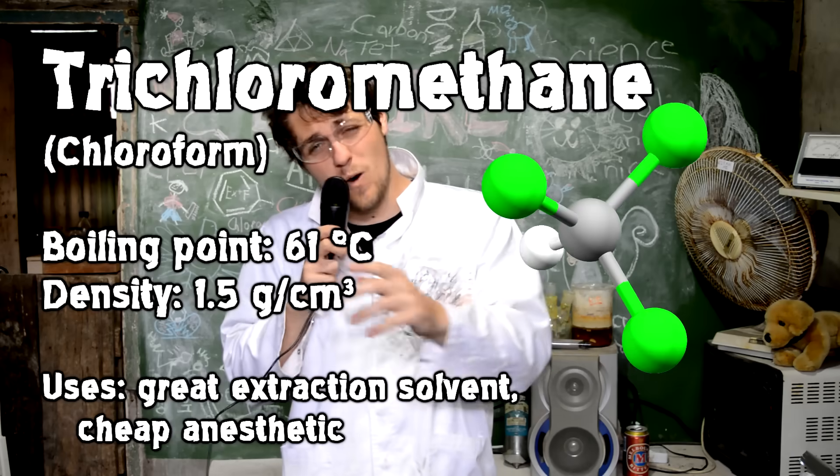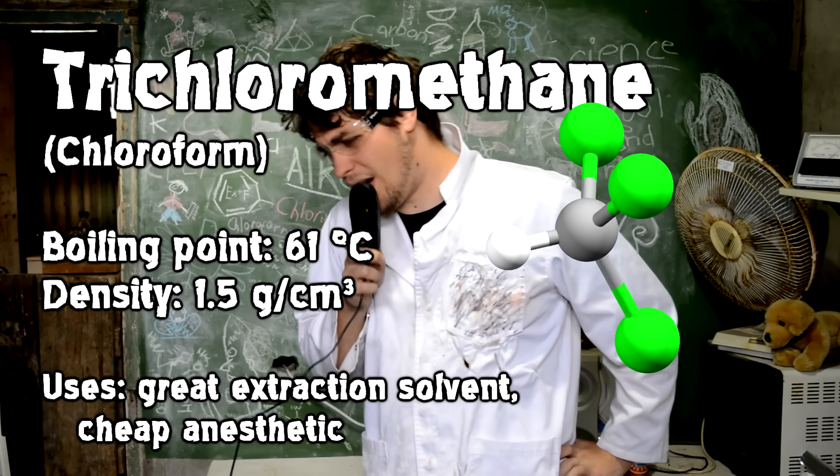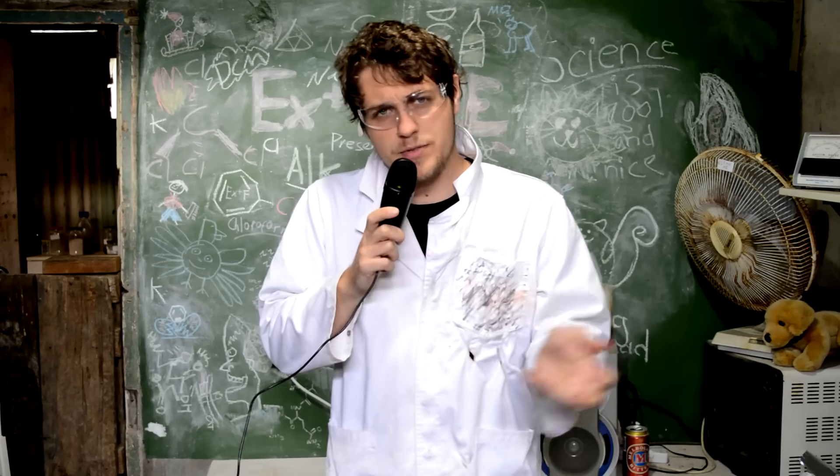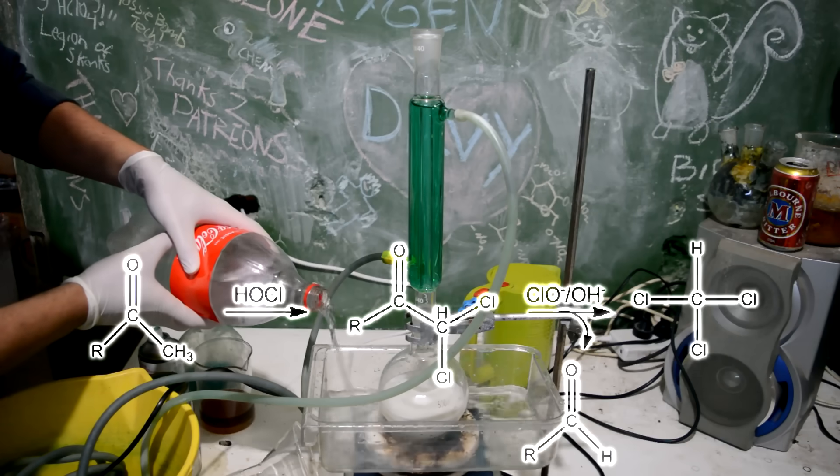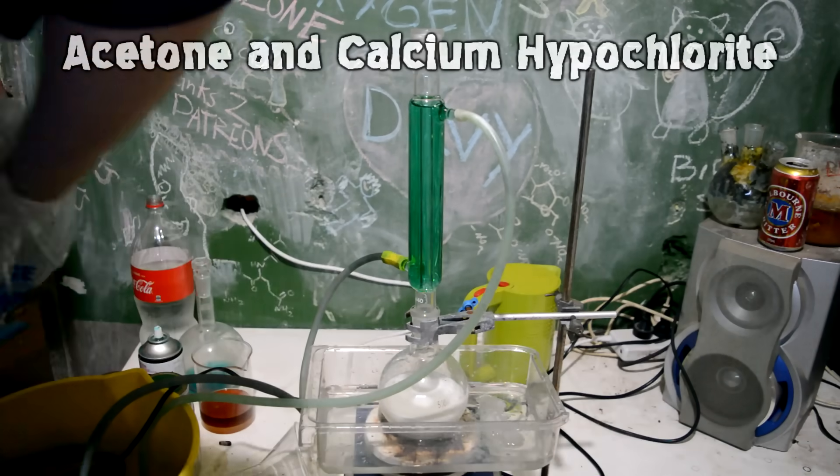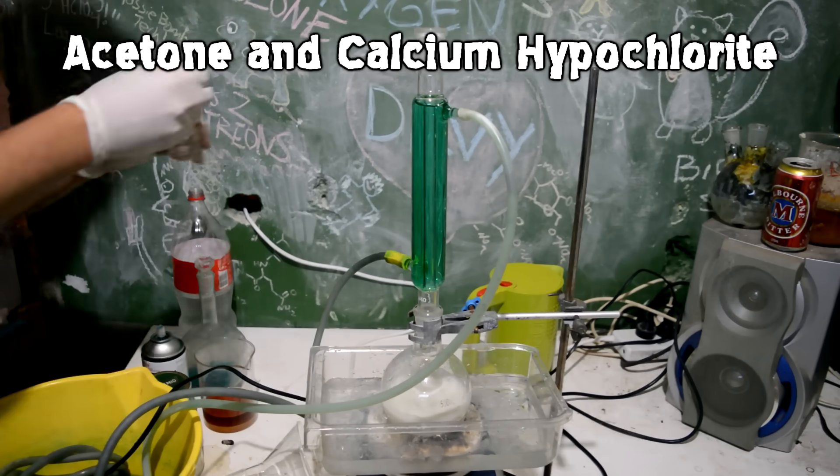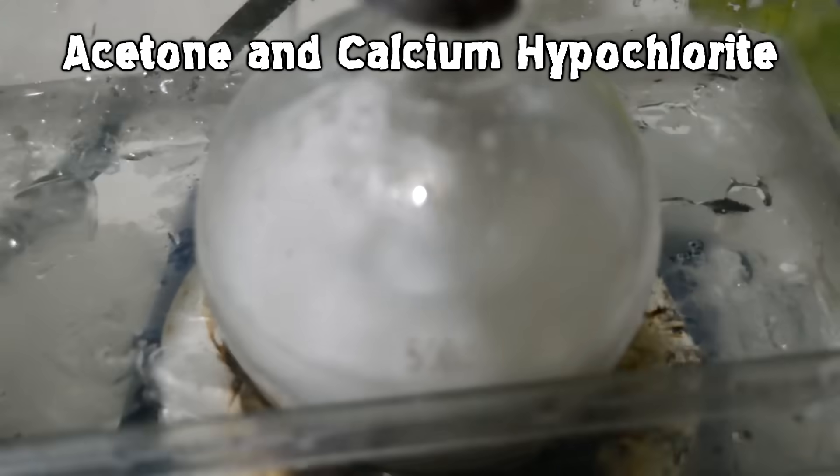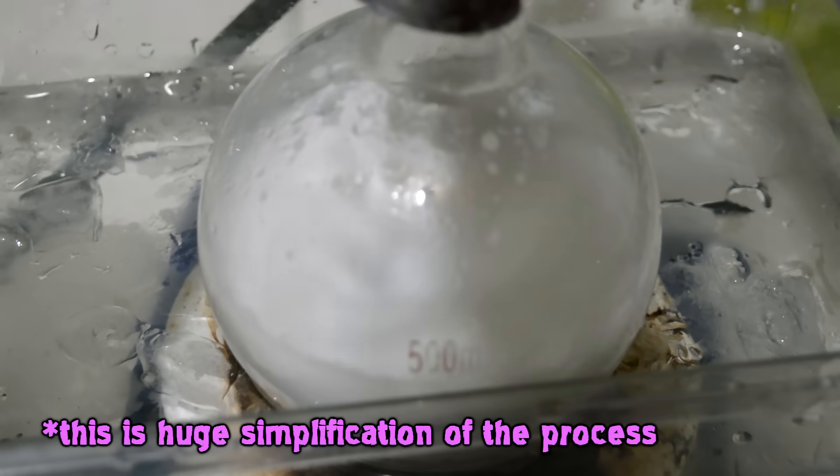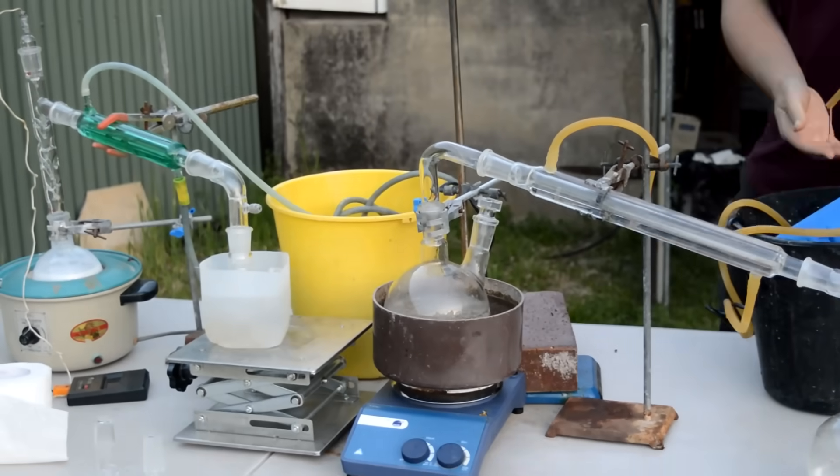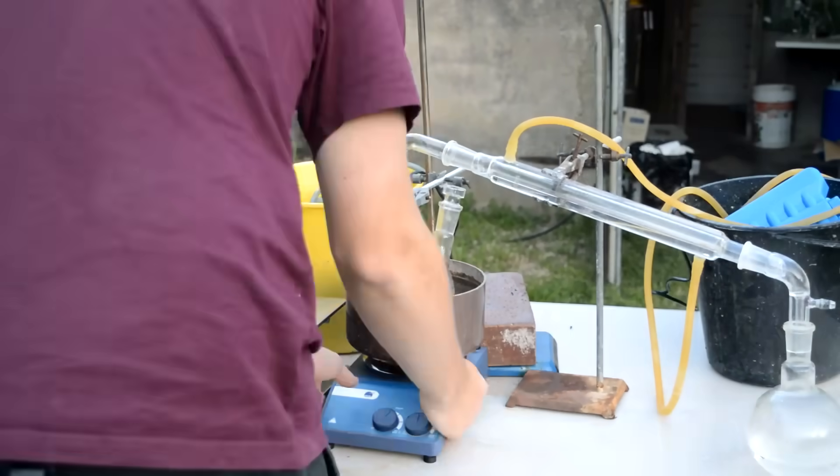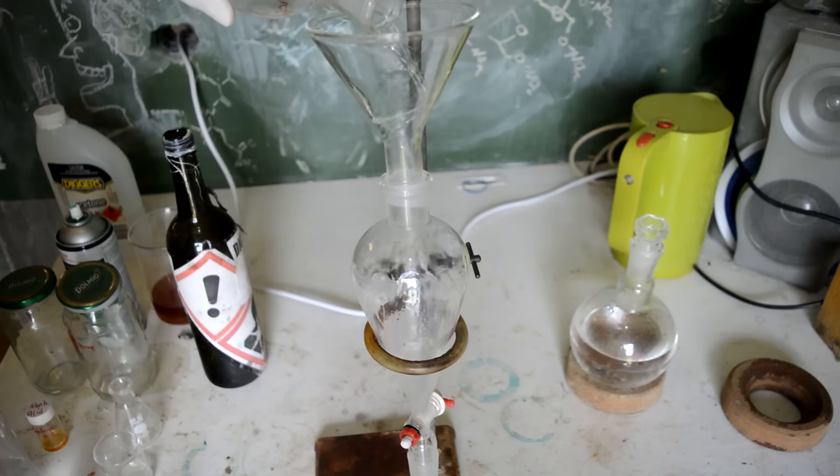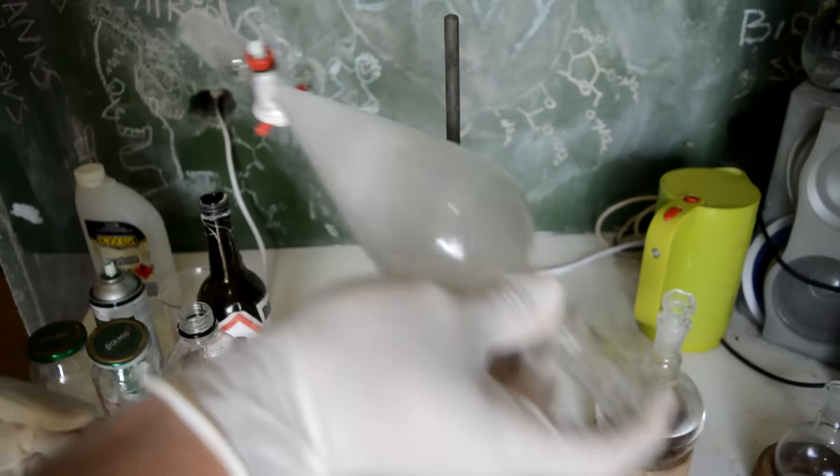Next up, we have trichloromethane or chloroform. Might not surprise you to learn that you can't just buy chloroform at the local hardware store these days. I'm sure you could in the 60s. But we do have to make it ourselves, which isn't particularly hard. We just need a ketone and a hypochlorite. Which sounds very complicated, but really we just get some acetone and some pool chlorine and mix it together.